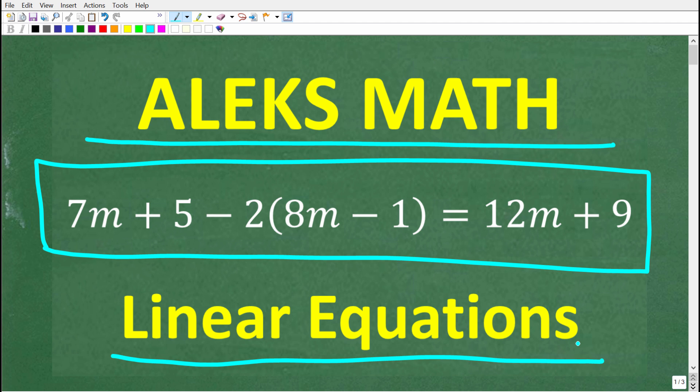Let's take a look at this problem and see if you can solve it. So we have 7m plus 5 minus 2 times 8m minus 1 is equal to 12m plus 9. Now, if you think you know the answer, go ahead and put that into the comment section. I'm going to show you the correct answer in just one second. And of course, I'm going to fully explain how to solve this problem.